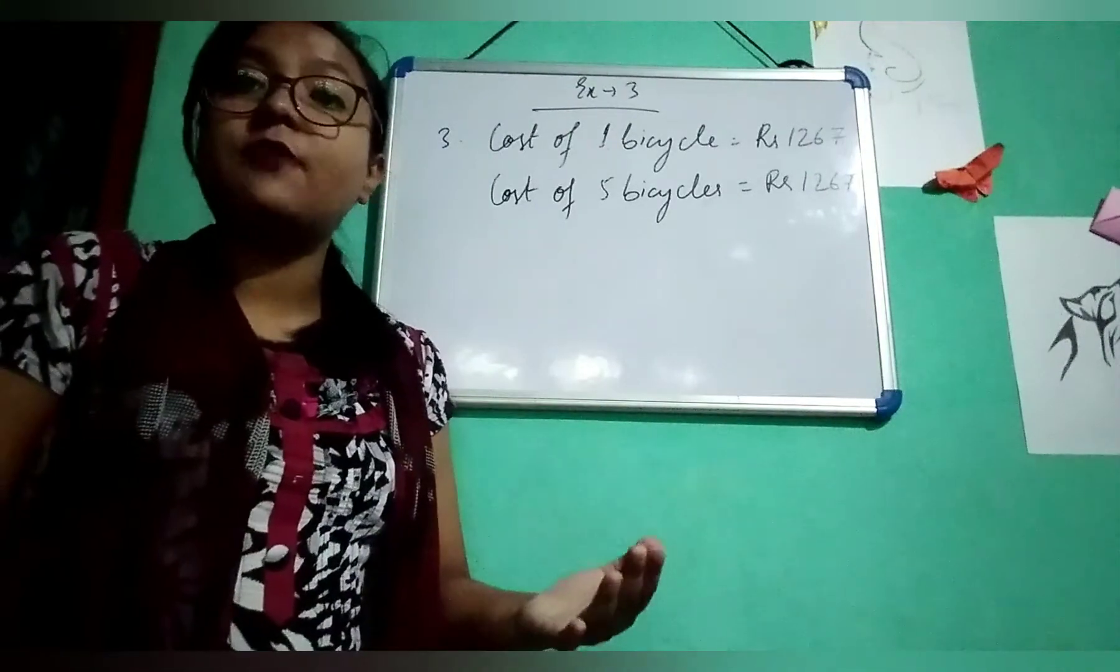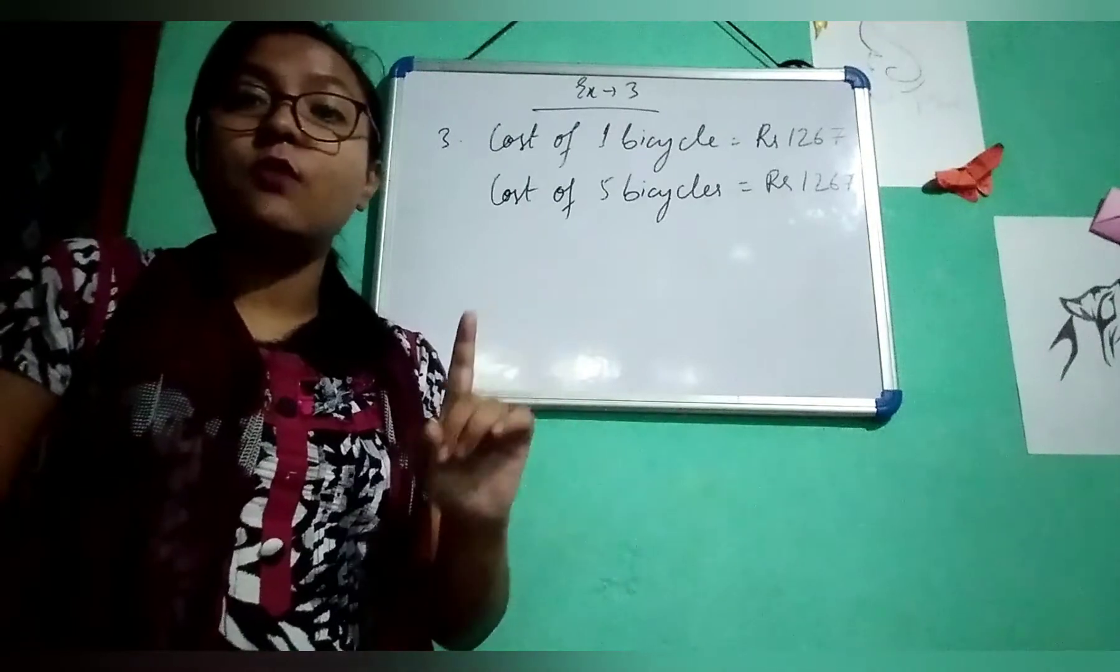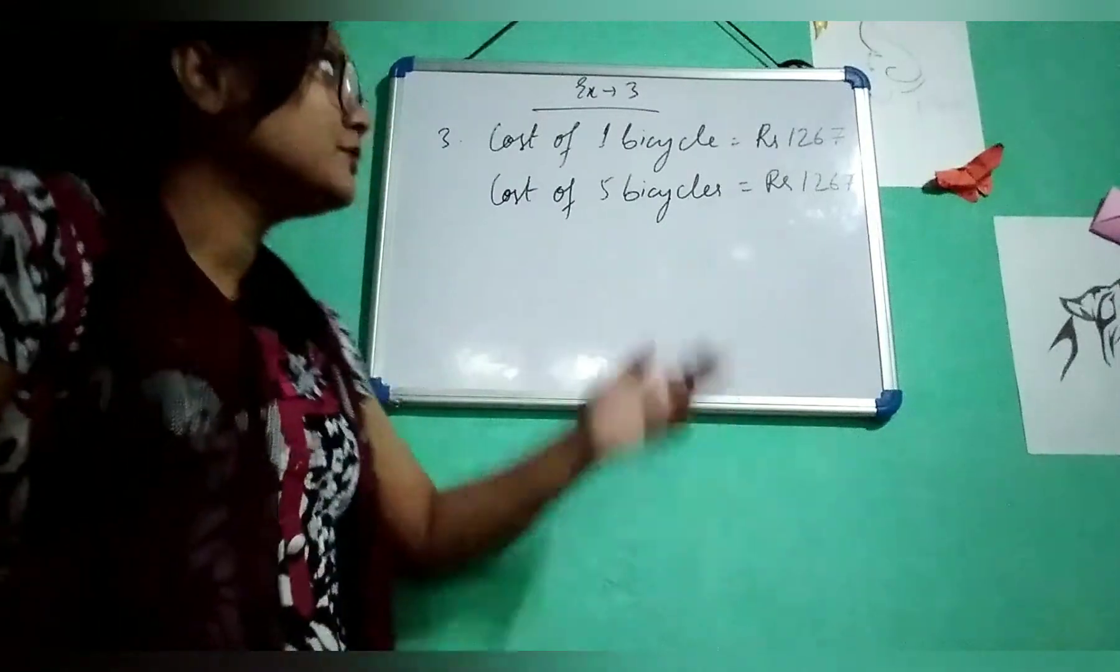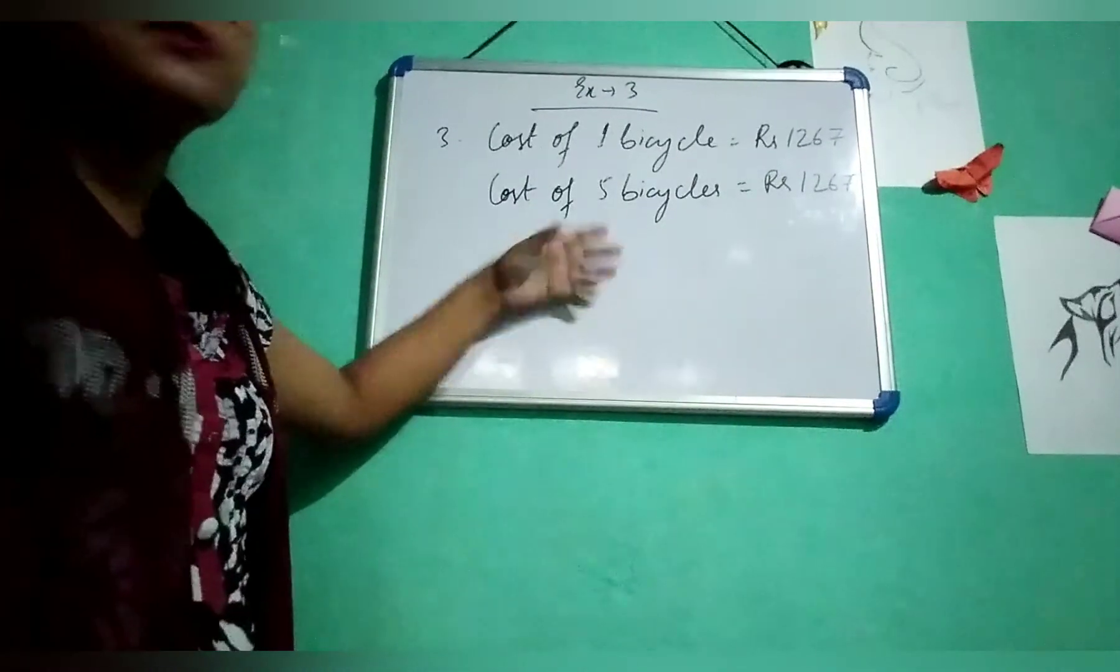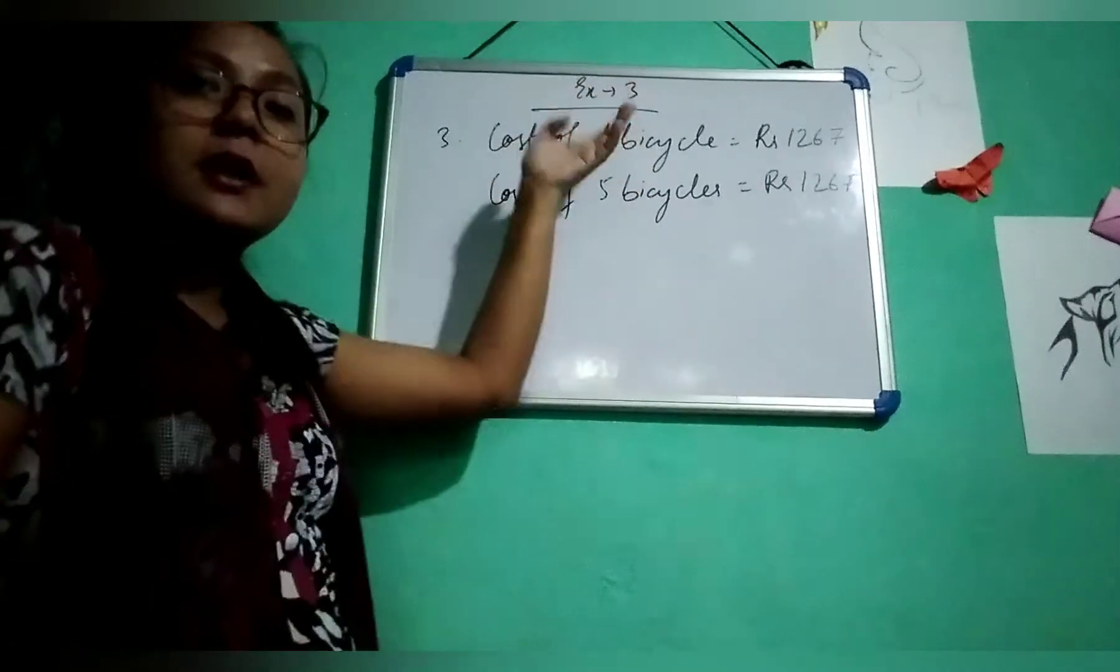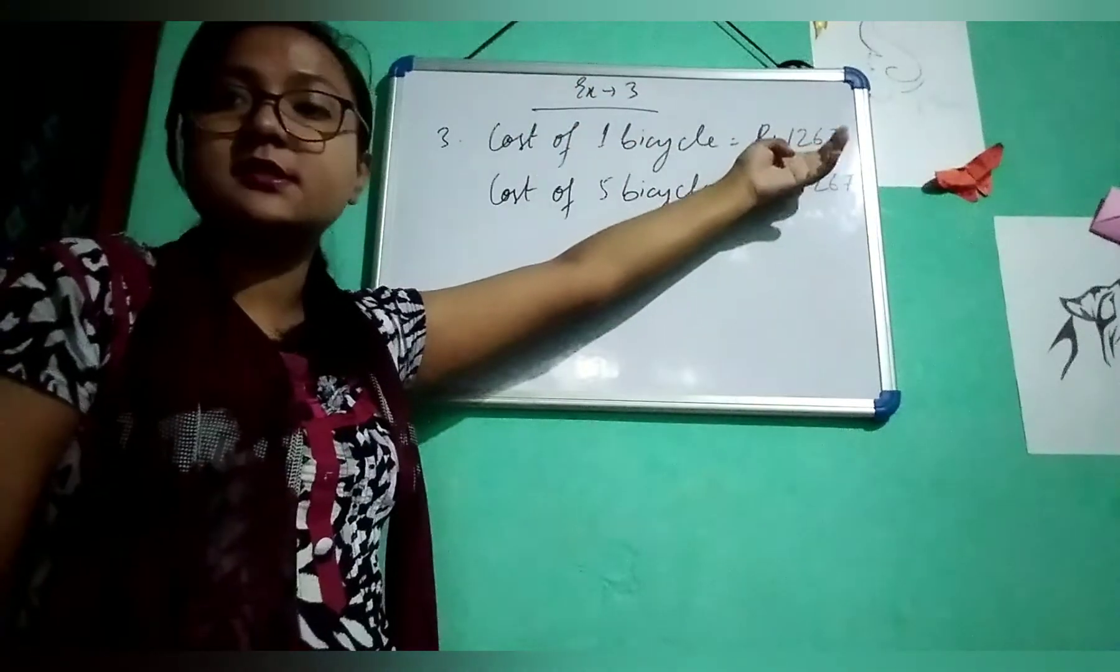Like, cost of 1 pen is Rs. 10, what will be the cost for 5 pens? For 1 pen it is Rs. 10, so 5 pens will be Rs. 50, that means 5 into 10. Similarly the same question. When 1 bicycle is Rs. 1,267, for 5 bicycles it will be into 5.